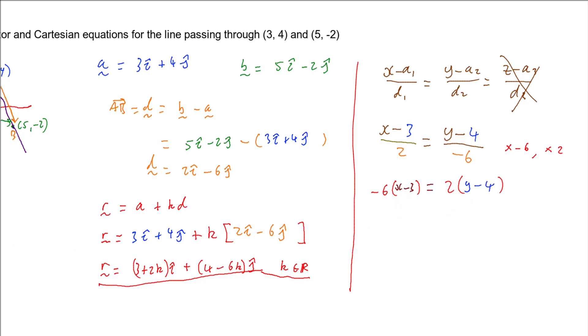And then let's expand those brackets. So I'm going to have -6x + 18 = 2y - 8. And then we can add 8 to both sides. And so that will leave us with 2y on the right, and -6x + 26 on the left. And then we can divide everything by 2, and that will leave us with -3x + 13 = y.